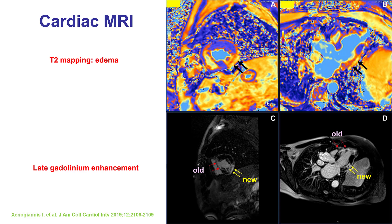MRI was indeed done in our patient with interesting findings. There was edema on the lateral wall on T2 imaging. And there was also late gadolinium enhancement, both in that area in the lateral wall, but also in another part of the anterior wall, which seemed to correspond with an old myocardial infarction. So the patient, based on the MRI, did have a lateral wall myocardial infarction.